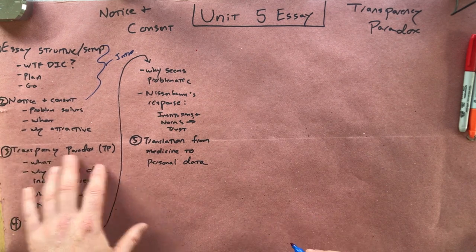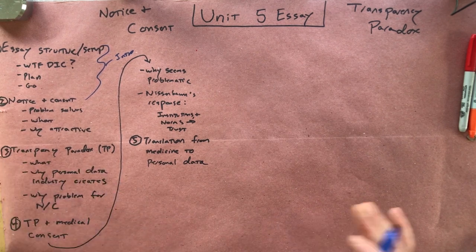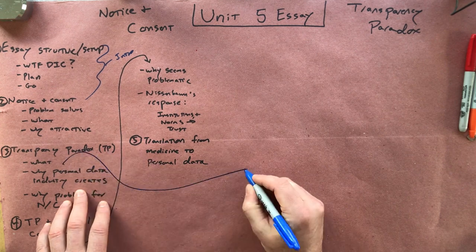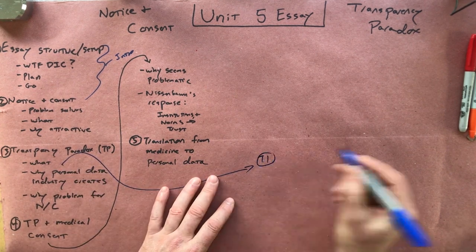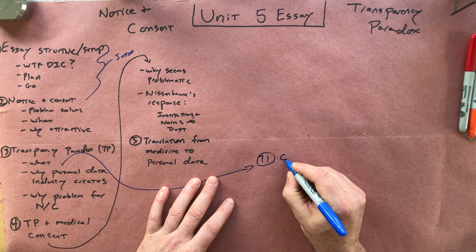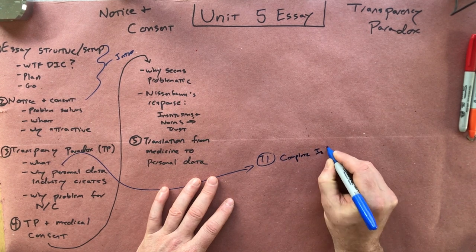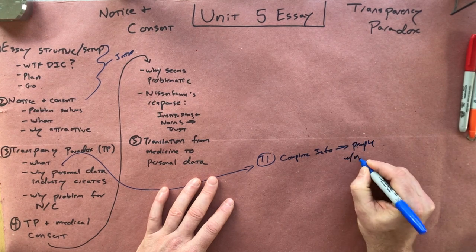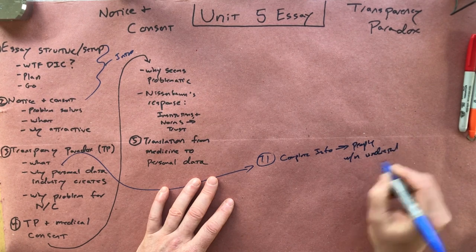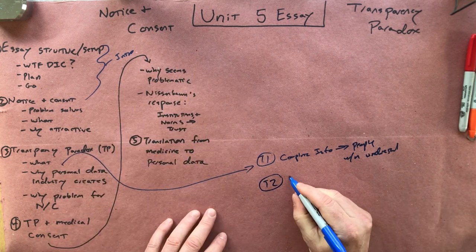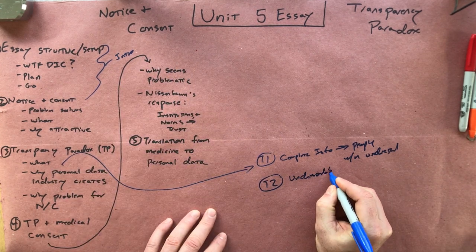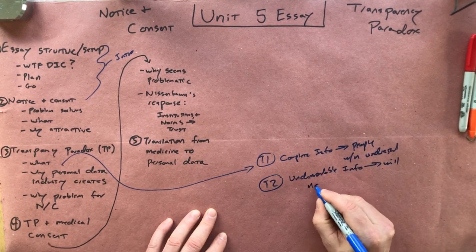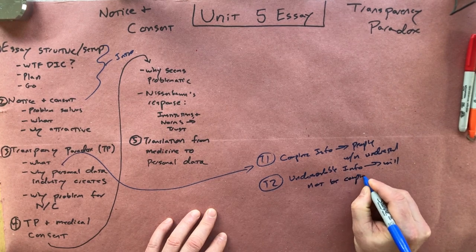Now to the meat of it — the transparency paradox. You want to say what it is. It's very simple to state, although you want to be a little careful. It's two horns: if we give complete information, people won't understand it, and if we give understandable information, it will not be complete enough. There are lots of different ways to put this, but that's the basic idea.